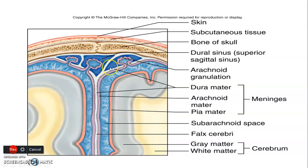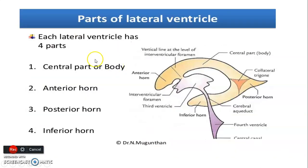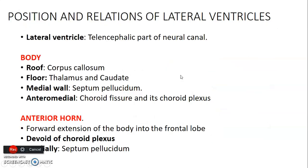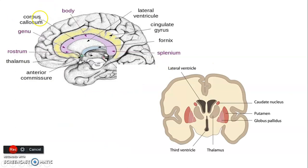The lateral ventricle has four parts: a central part which is the body, a frontal horn, a posterior horn which is the occipital horn, a temporal horn which is the inferior horn, and a collateral trigone. The lateral ventricle communicates with the third ventricle through the interventricular foramina of Monro. Regarding the relations of the lateral ventricle body: it comes from the telencephalon. Above the body we have the corpus callosum.